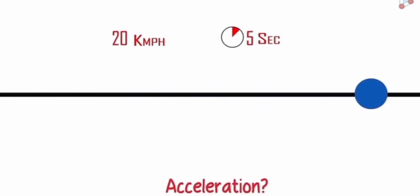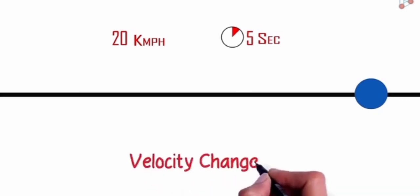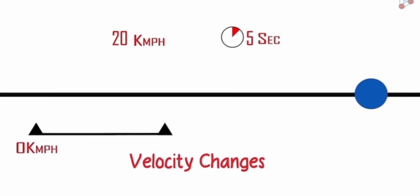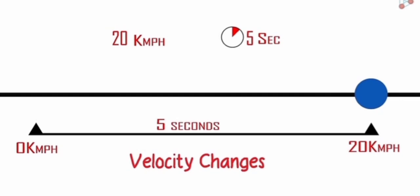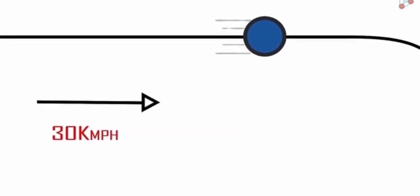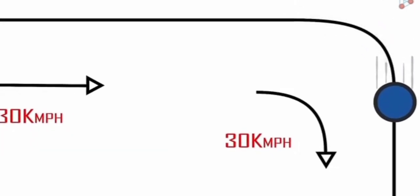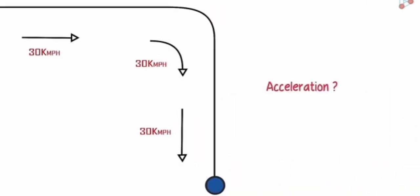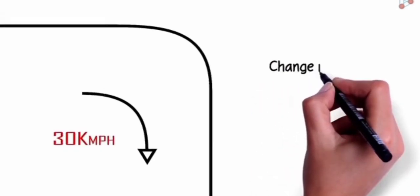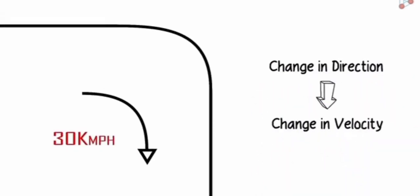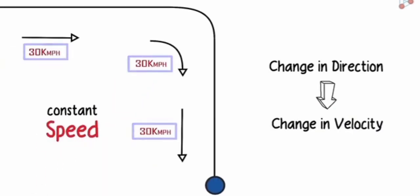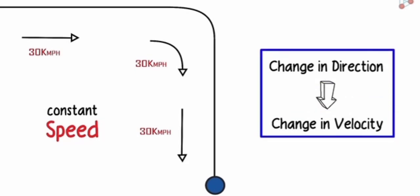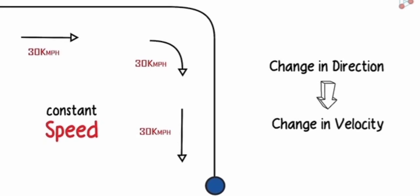If a body moves from rest and reaches a velocity of 20 km/h in 5 seconds, is acceleration involved? Yes, because velocity changed from zero to 20 km/h. In another scenario, if a body is moving at 30 km/h and then turns right, continuing at 30 km/h — is there acceleration? Yes, because the direction changed, so velocity changed. Speed is constant but velocity changes as direction changes. Acceleration exists only when there is a change in velocity.